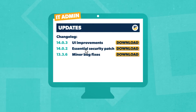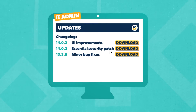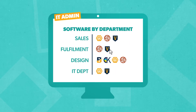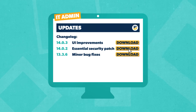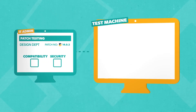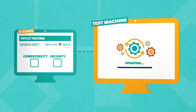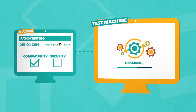Once a vulnerability is identified, they have to figure out which systems or applications are affected and find the right patch to solve the problem. Then, admins download the patch from the vendor's website. They usually test it on a single device first to make sure the patch doesn't interfere with any other applications or create a new glitch.